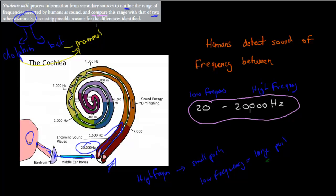We also have to identify or discuss reasons why the frequencies might be different — why do we have 20 to 20,000 Hz, and why do dolphins and bats have different frequencies? That's what we have to do in this video.